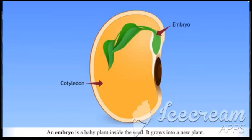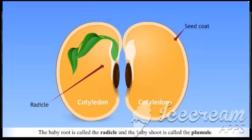An embryo is a baby plant inside the seed. It grows into a new plant. The baby root is called the radicle, and the baby shoot is called the plumule.